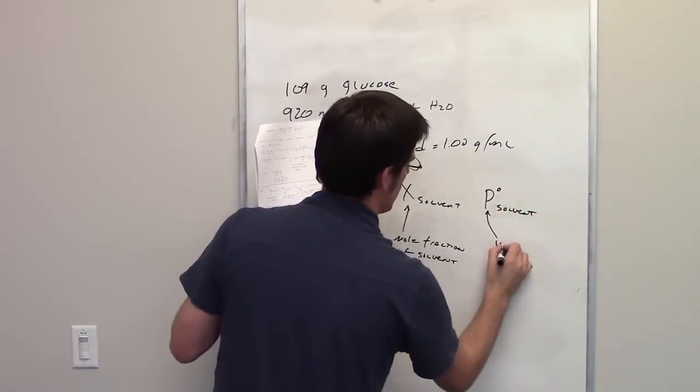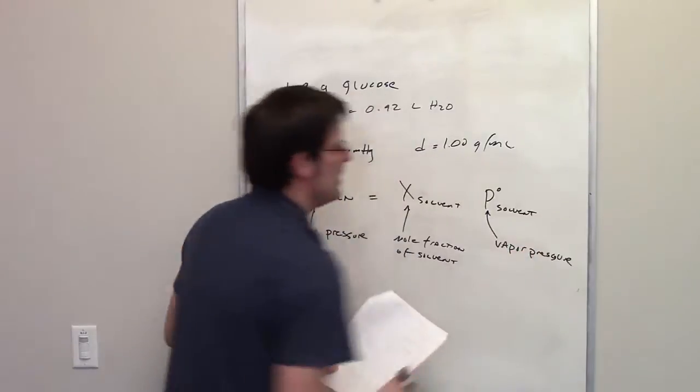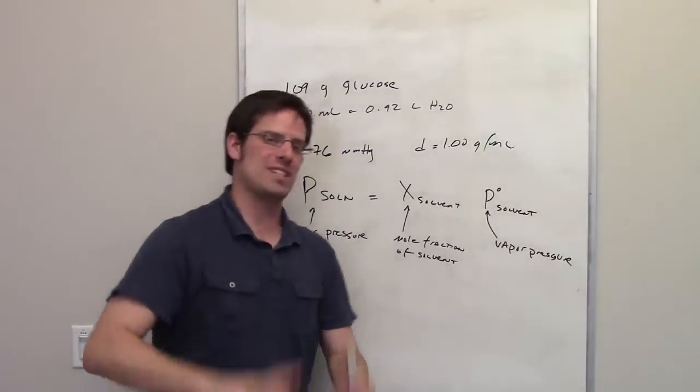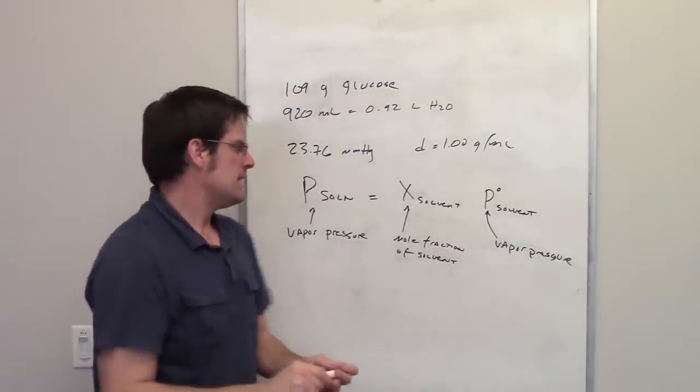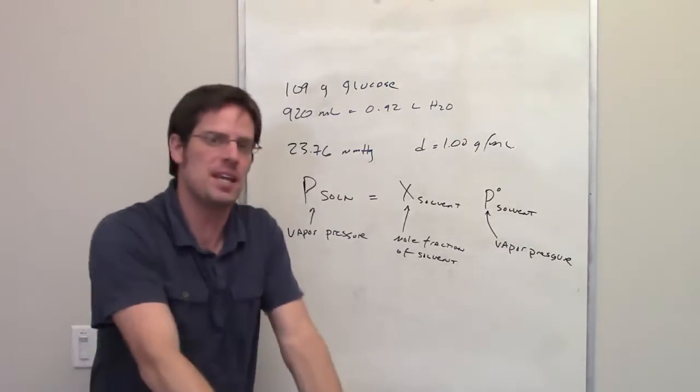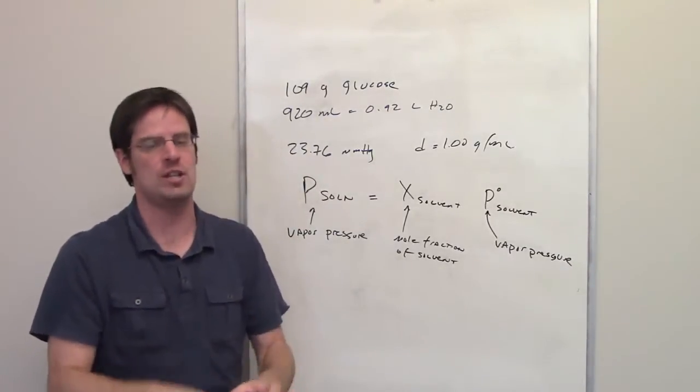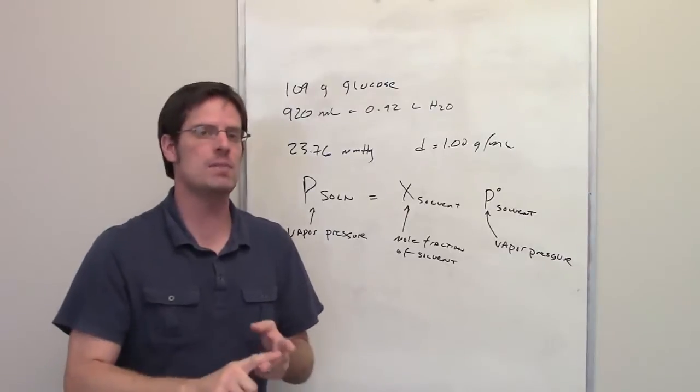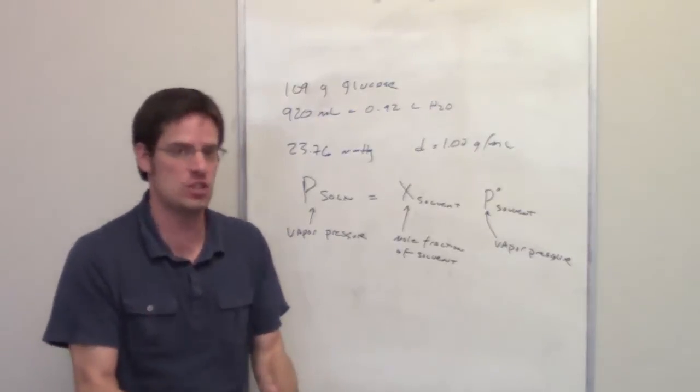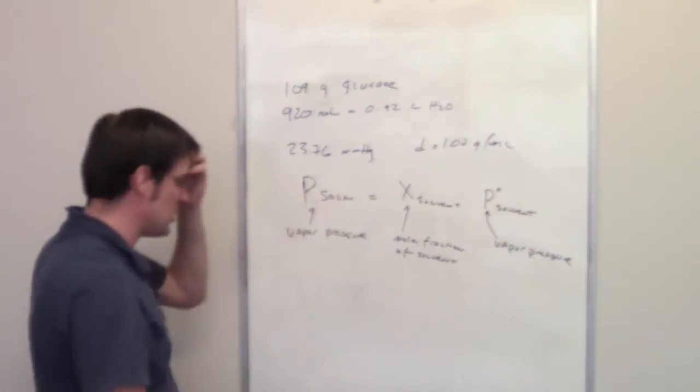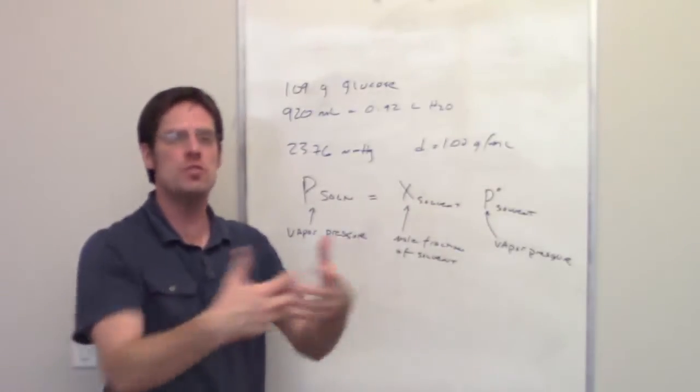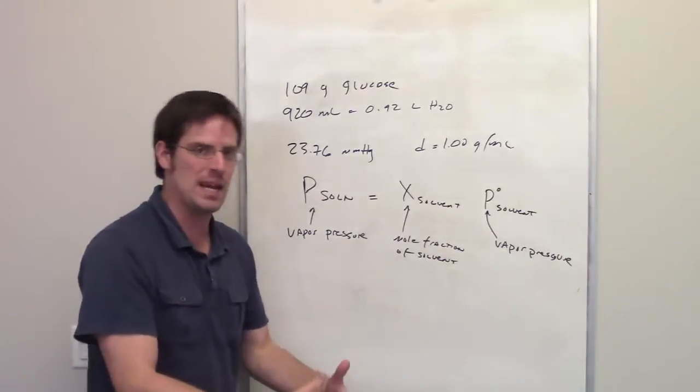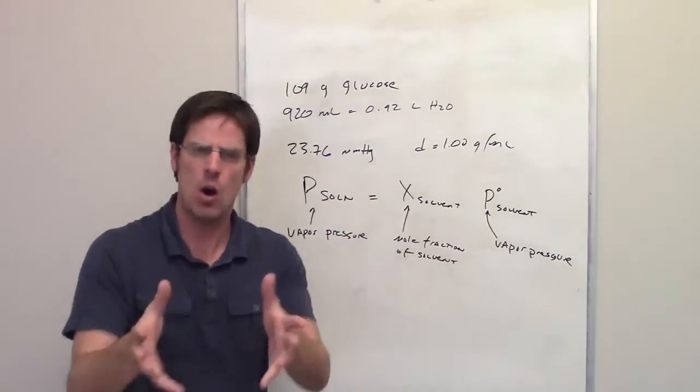This would be the vapor pressure of what the solvent would be if there was nothing dissolved in it. When we dissolve something in a solvent, it changes the melting point, the boiling point, and the vapor pressure. This equation helps us determine the new vapor pressure after adding a solute.